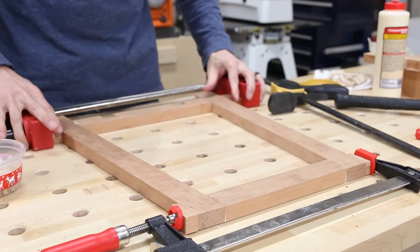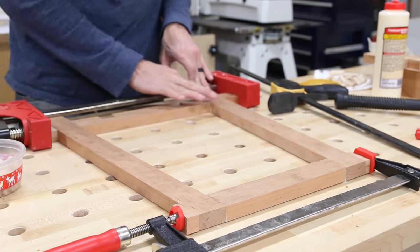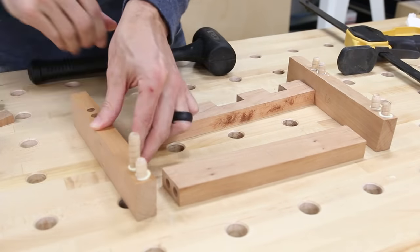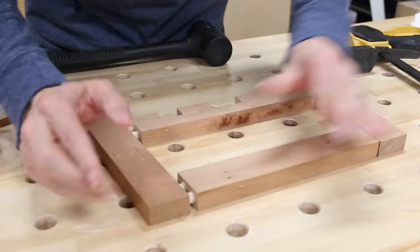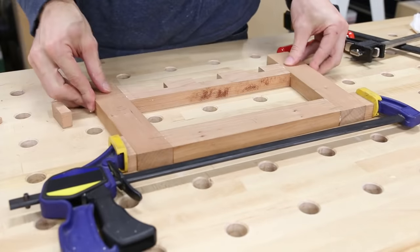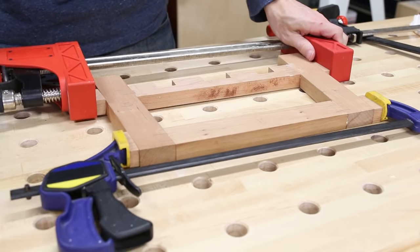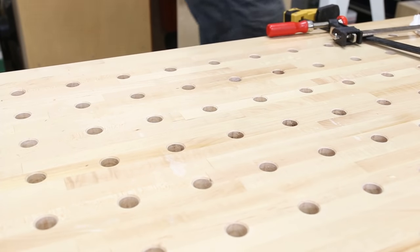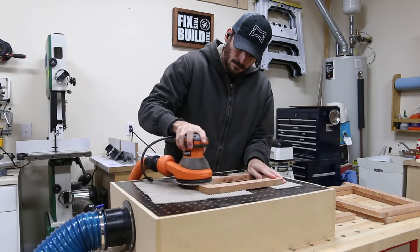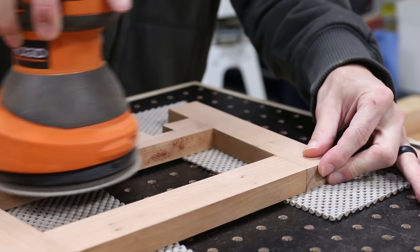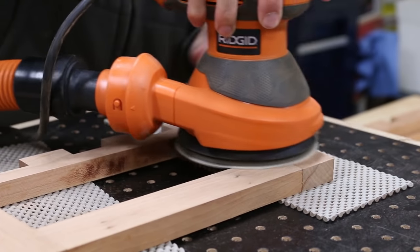Because the sides are angled I grabbed some of the off cuts that had one straight side and one five degree side. This let me clamp the joints together without the clamps sliding. I assembled the large two sides then I repeated the same process for the small sides. Once the glue dried I sanded the joints flush and I removed any glue squeeze out that happened during assembly.